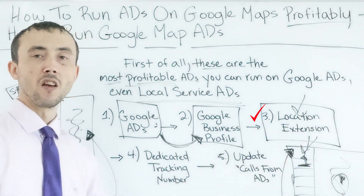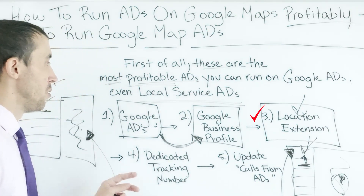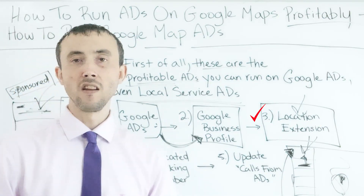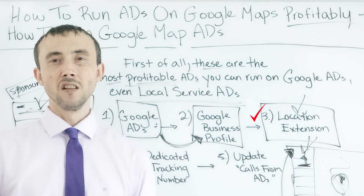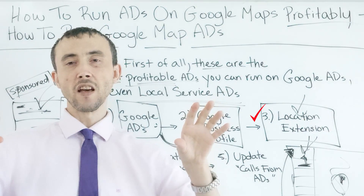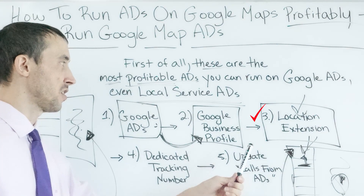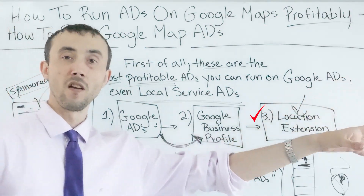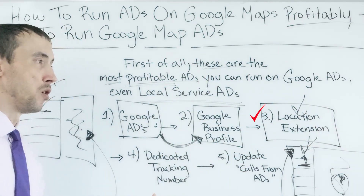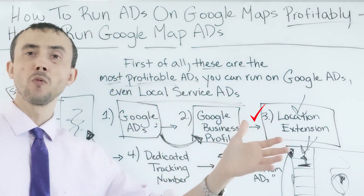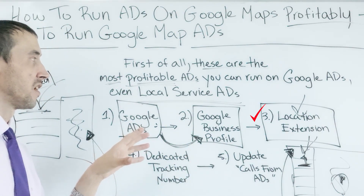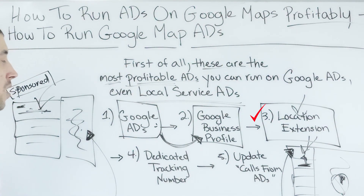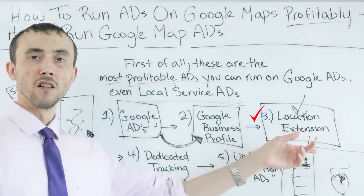If you have more than one location, you want to set up the location extension to represent the location closest to the campaign you have. For example, if you have two campaigns — one targeting San Francisco, one targeting LA — and you have physical locations in both cities, your San Francisco campaign's location extension should reference the Google Business Profile set up for San Francisco, not Los Angeles. The searcher in LA sees the ad with the LA location extension.